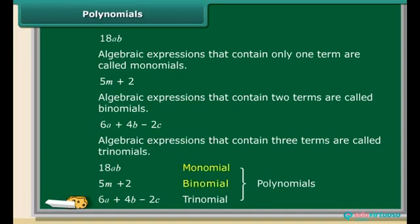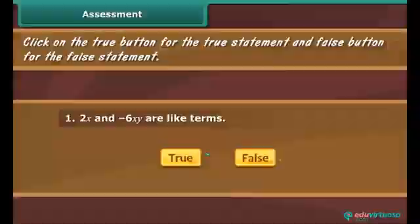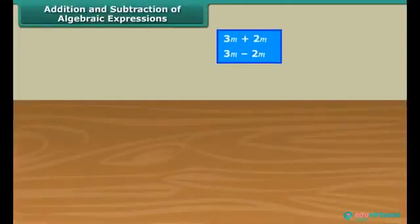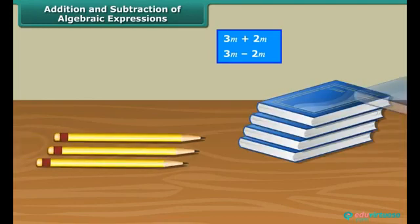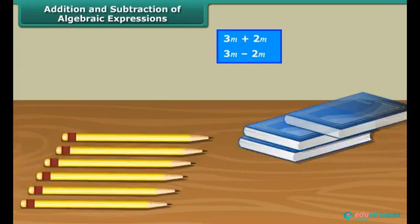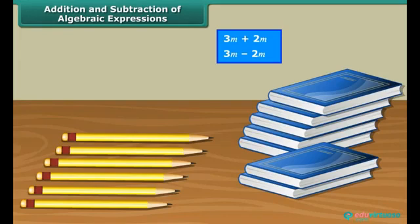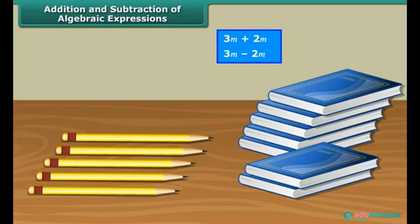We can only add or subtract like terms. Think of it this way: on a table we have three pencils and two books. We cannot add three pencils to two books because they are not the same kind of object. If we get another three pencils and five books, we have six pencils and seven books, but we still can't combine them since they are different. Similarly, we can only add or subtract similar objects in algebra.